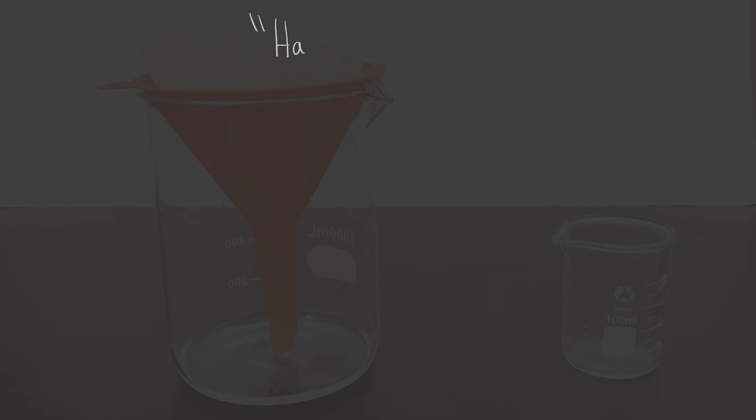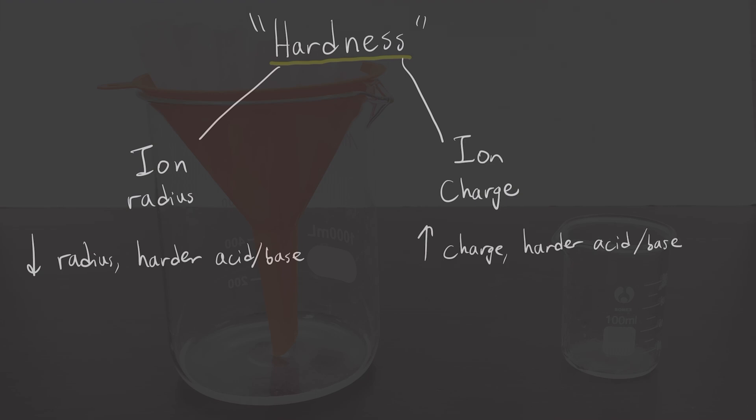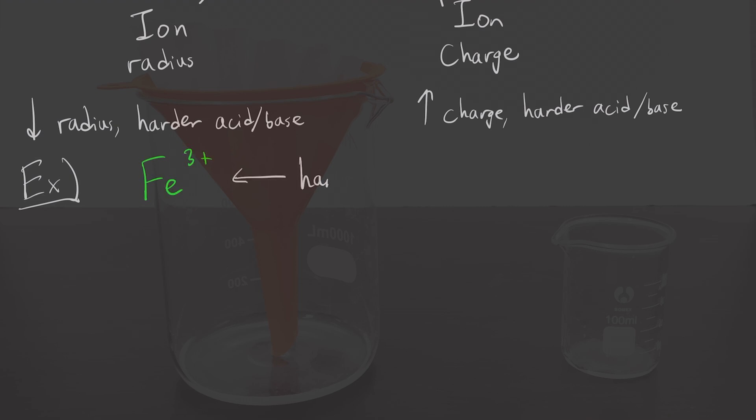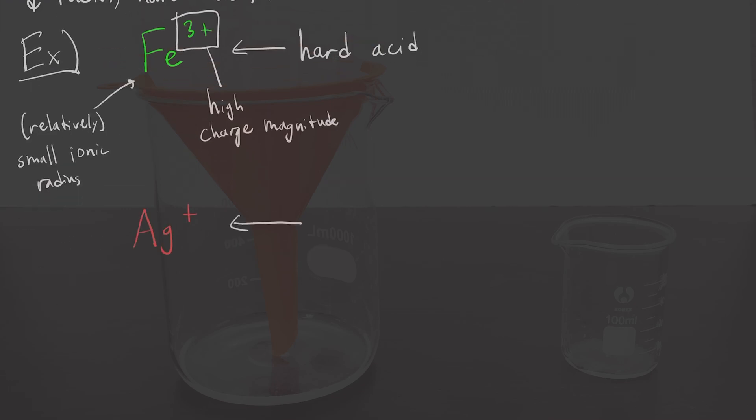Now let's talk about the hardness of an acid or a base. This factor comes down to two things, ion size, or radius, and ion charge, as we were discussing before. The smaller the ionic radius and the higher the magnitude of the charge, the harder the acid or base is. For example, an ion like iron 3+ would be considered a hard acid because it has a very high charge and a relatively small ionic radius. An ion like silver+ would be considered a soft acid because it has a relatively low charge while also being a very large ion. An ion like O2- would be considered a hard base, while an ion like I- would be considered a soft base.